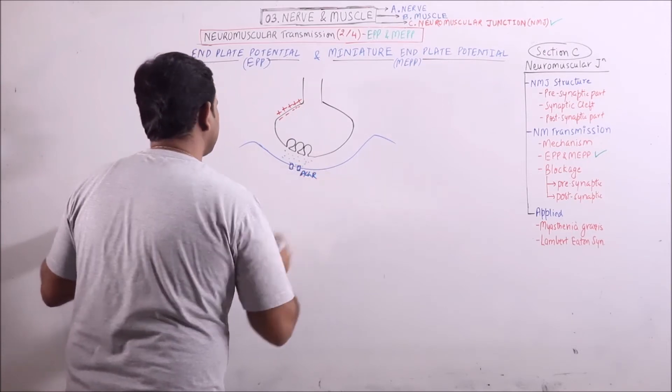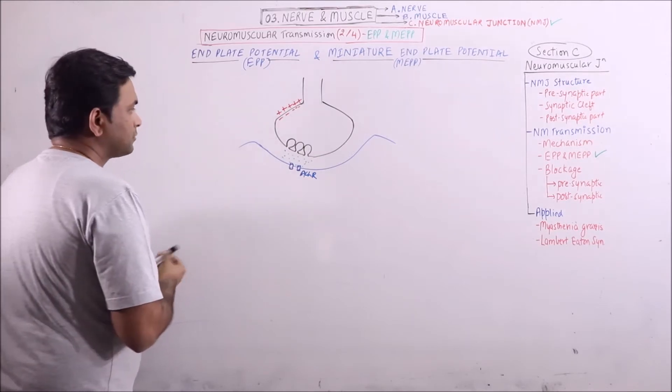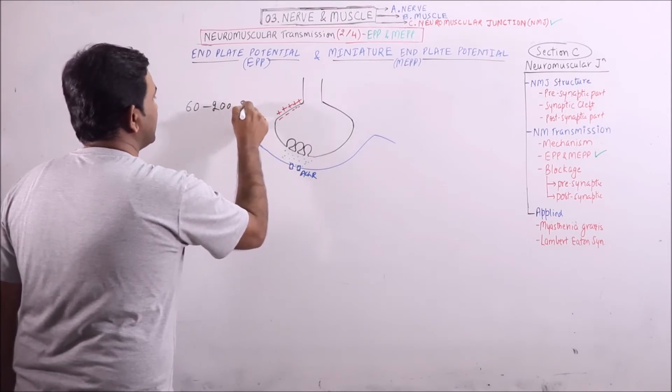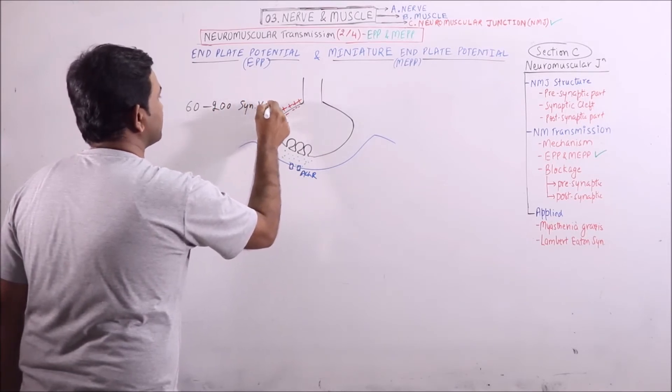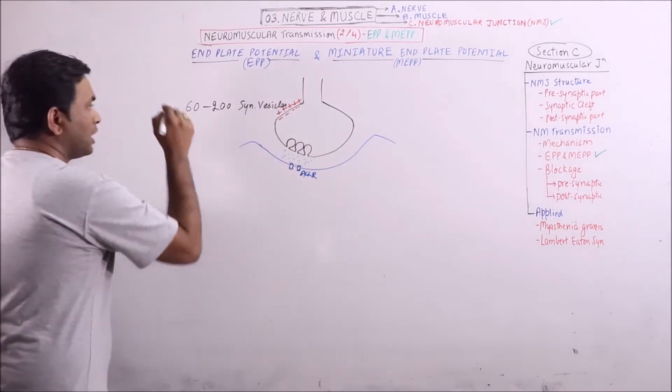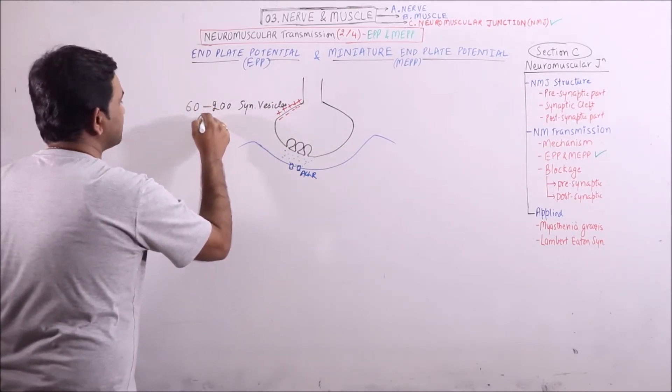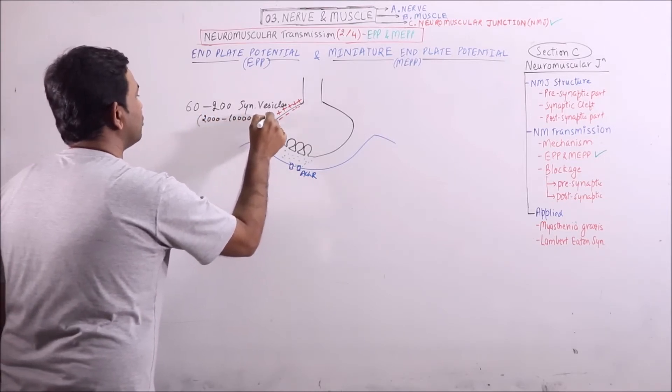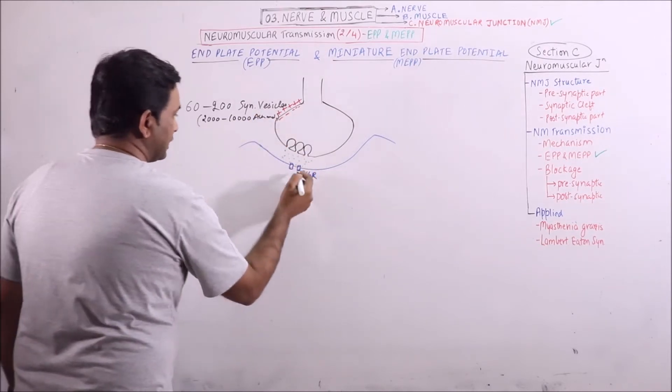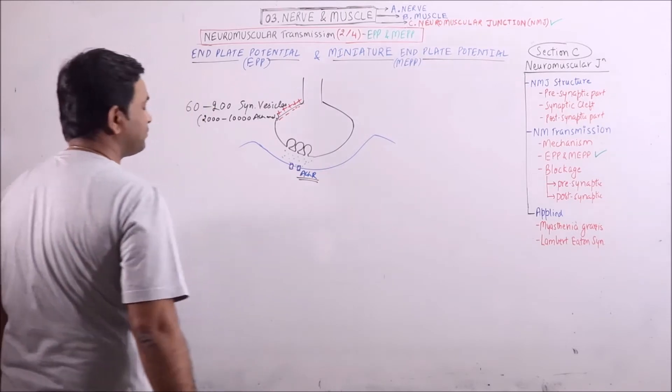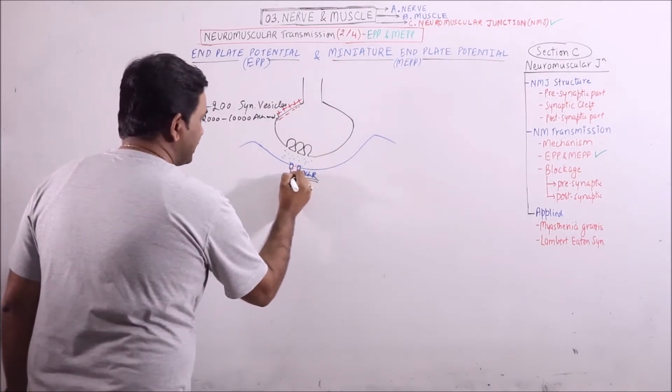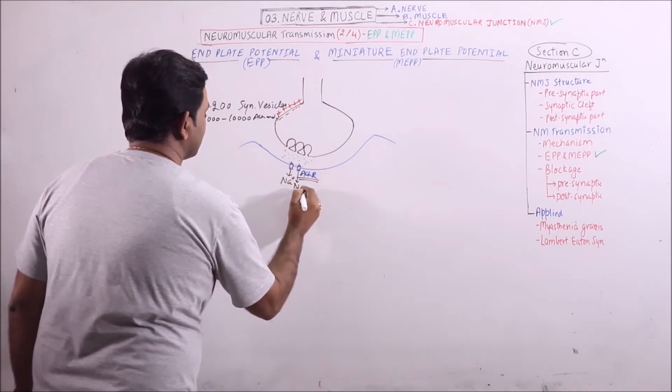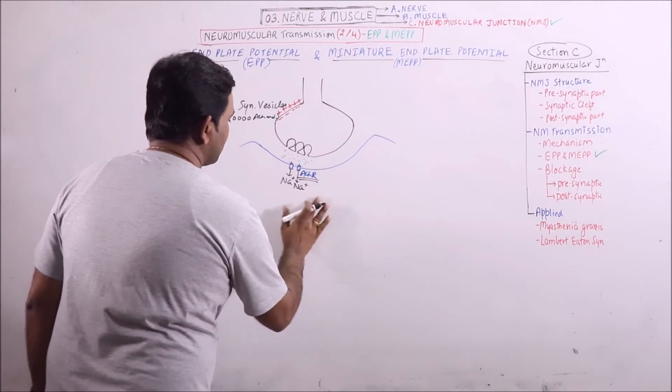In this process roughly 60 to 200 synaptic vesicles are involved. And each vesicle releases about 2000 to 10,000 acetylcholine molecules. This stimulates the acetylcholine receptors at the motor end plate and finally sodium enters the muscle fiber.